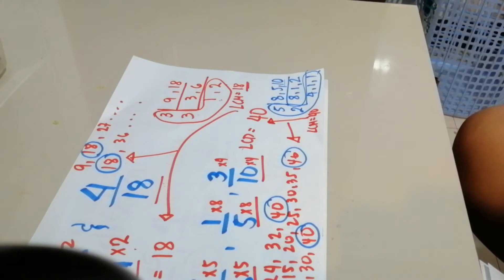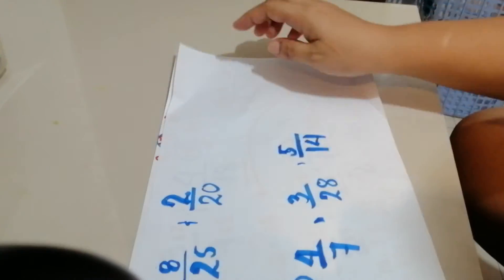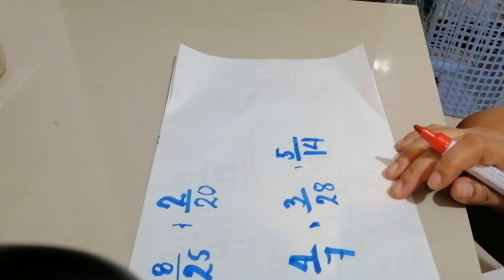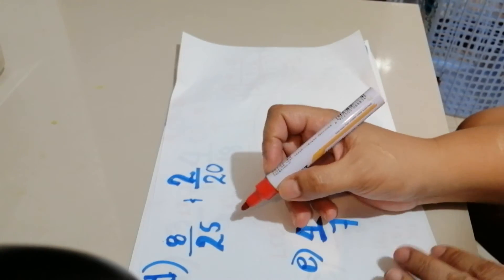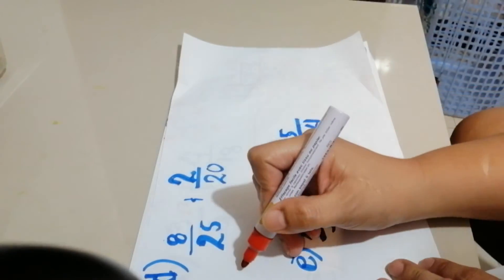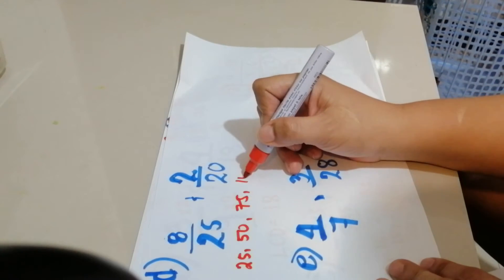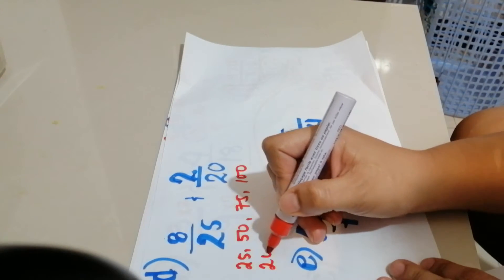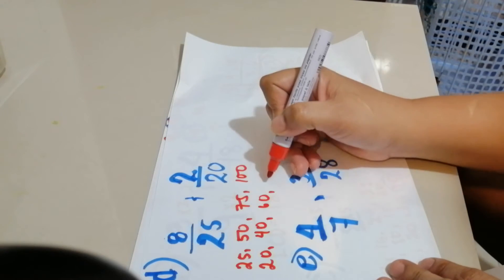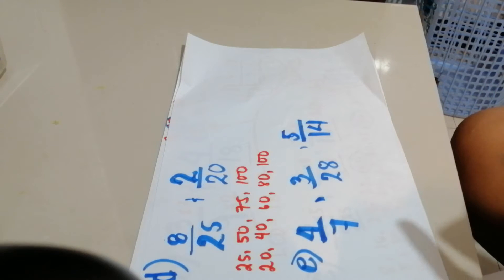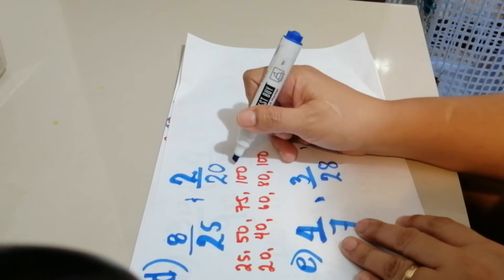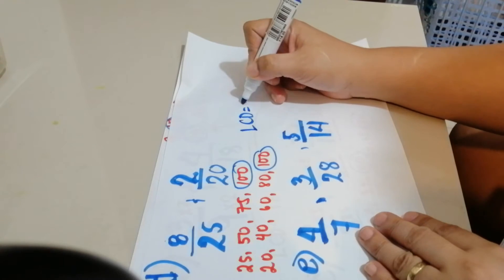Another example: 25 and 20. Using listing, skip count by 25: 25, 50, 75, 100. For 20: 20, 40, 60, 80, 100. As you can see, both have a common multiple of 100. Therefore, the LCD is 100.